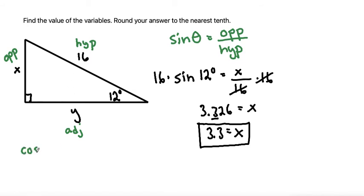We can say that the cosine of the angle is equal to the adjacent side over the hypotenuse. So then plugging the numbers that we have in, we have cosine of 12 degrees is equal to the adjacent side, which is the y, divided by the hypotenuse, which is 16.